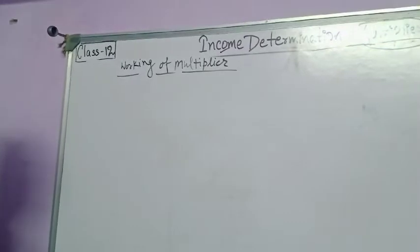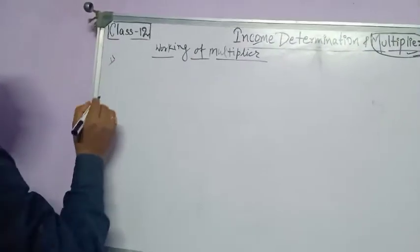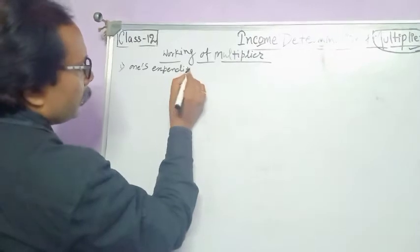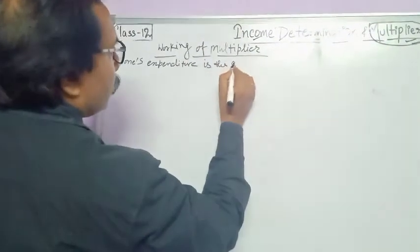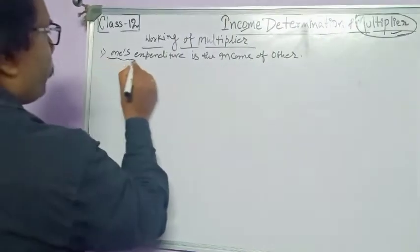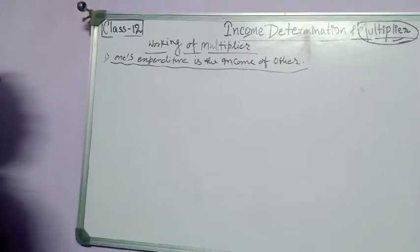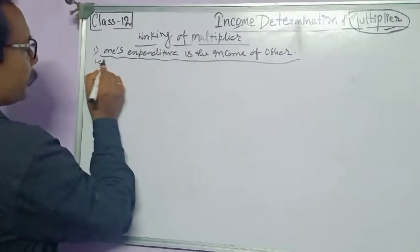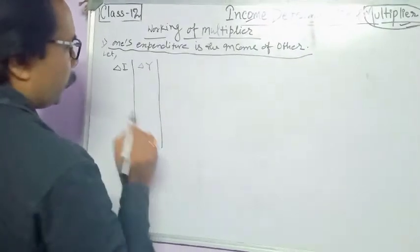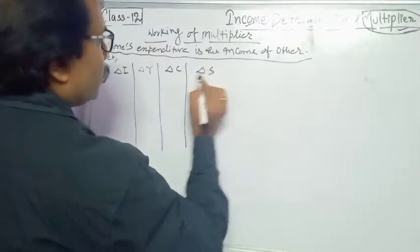Now let's look at the working of the multiplier. The most important point is that one's expenditure is the income of another. This can be explained with the help of the following schedule. Let the columns be: delta I (change in investment), delta Y (change in income), delta C (change in consumption), and delta S (change in saving).